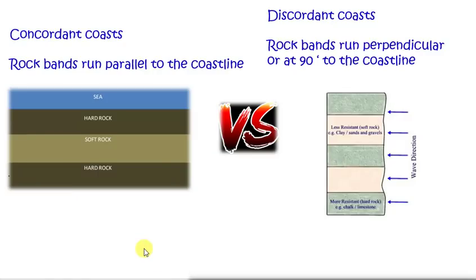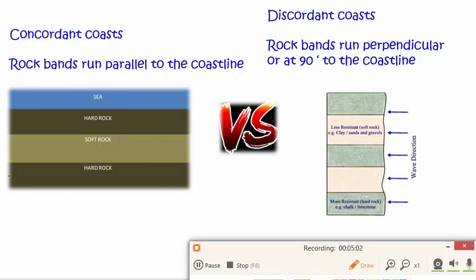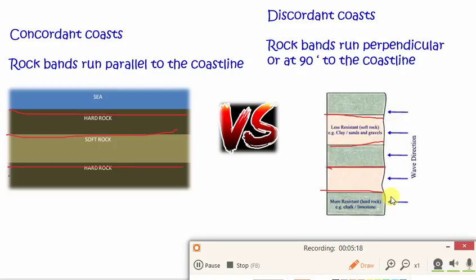The first element of geological structure is how are rock bands aligned in relation to the coastline. There are two types. Concordant coasts — your rock bands run parallel to the coastline, so they're actually in line, parallel to the sea. Discordant coastlines — your rock bands alternate between hard and soft and are perpendicular or 90 degrees to the ocean. In lesson, we're going to look at how that causes different types of landforms.